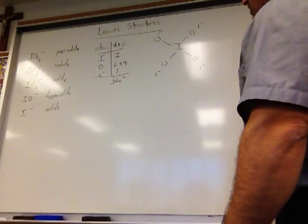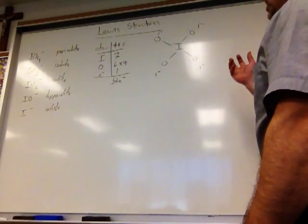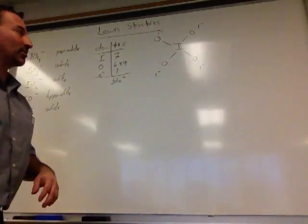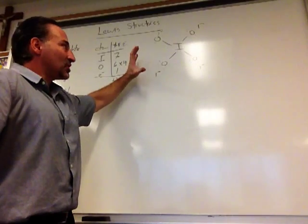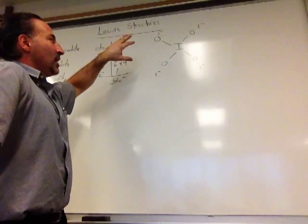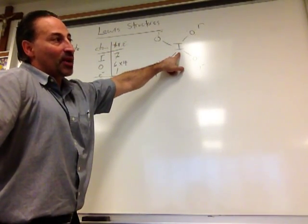When we do the accounting for charge, remember that the number of electrons that the atom wants to possess is related to its position on the periodic table. So oxygen, being a chalcogen in group 16, wants to have possession of 6 electrons. All the octets are filled here, by the way. And I also point out that because iodine has an atomic number greater than 15, it is able to accommodate expanded octets.